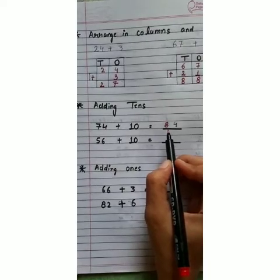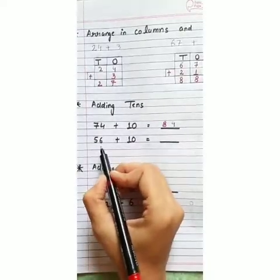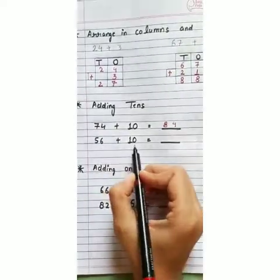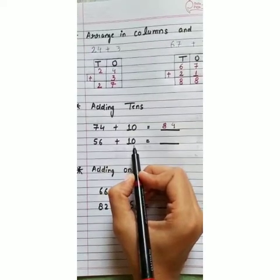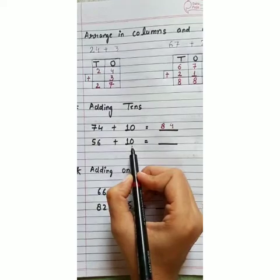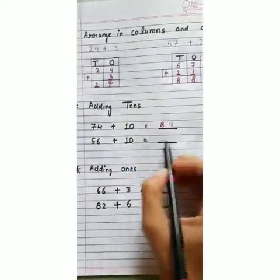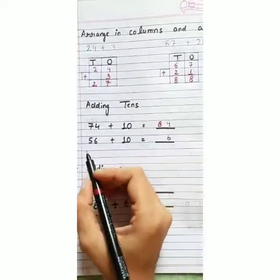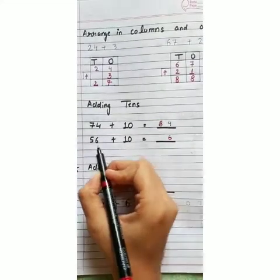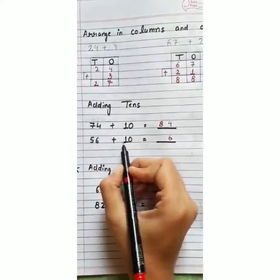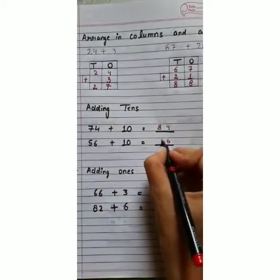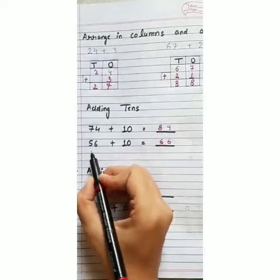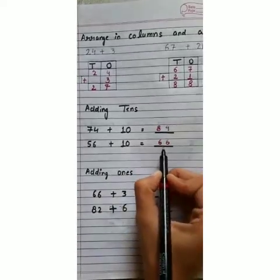Now we will take a second example: fifty-six plus ten. Six and zero are at one's place — six plus zero is six. At tens place, we have five and one: five plus one is equal to six. So, by adding ten to fifty-six, we get sixty-six.